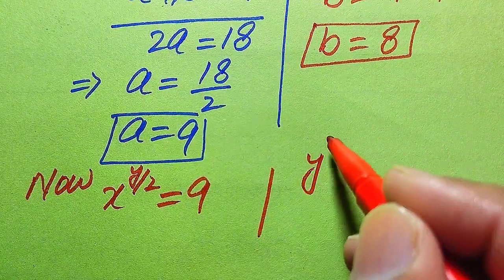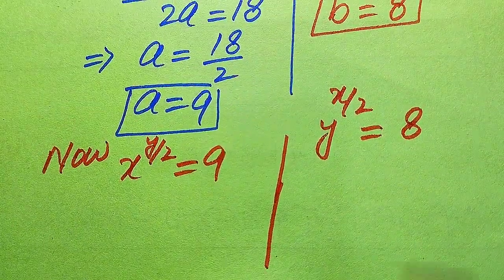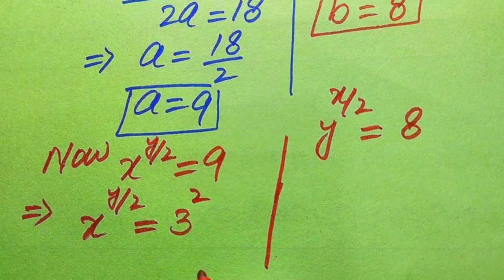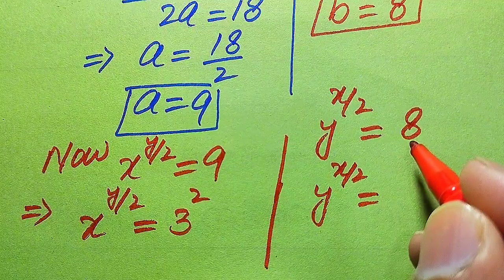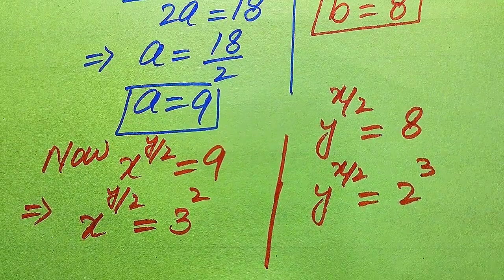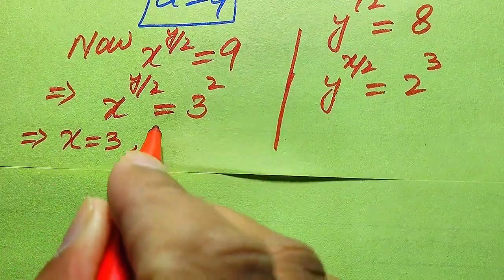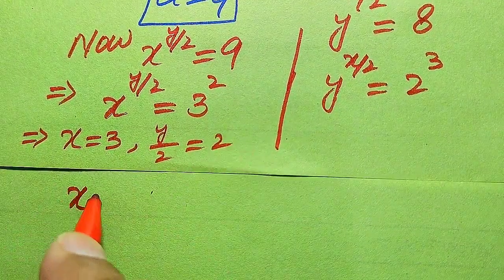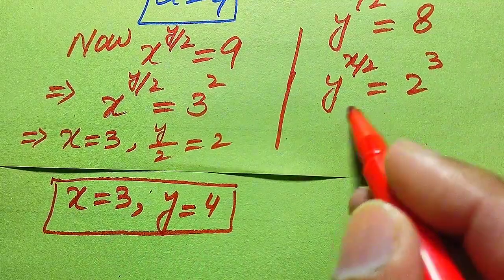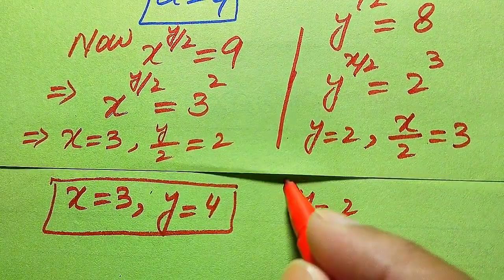Rewriting: x to the power of y over 2 equals 9, which is 3 squared. And y to the power of x over 2 equals 8, which is 2 cubed. Comparing bases and exponents on both sides: from the first equation, x equals 3 and y over 2 equals 2, giving y equals 4. From the second equation, y equals 2 and x over 2 equals 3, giving x equals 6. So our two candidate solution pairs are x equals 3, y equals 4, and x equals 6, y equals 2.